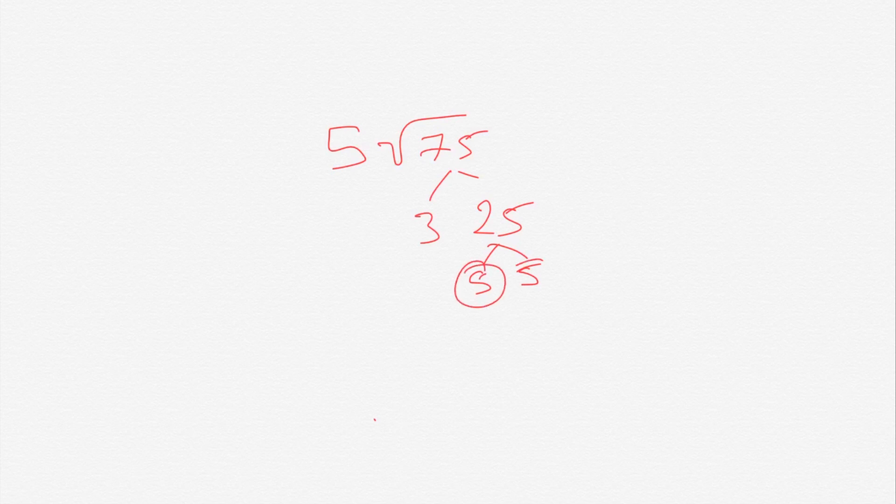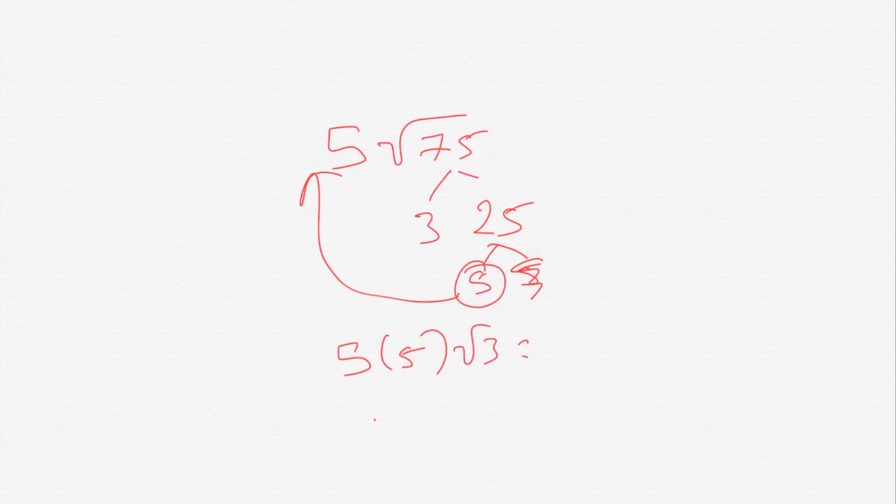Five times the square root of seventy-five can be simplified. Seventy-five is three times twenty-five, and twenty-five is five squared. So the five squared comes out, and then you'd have five times five times the square root of three, which is twenty-five times the square root of three.